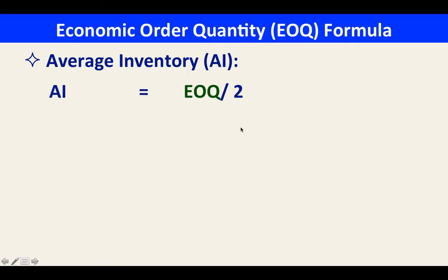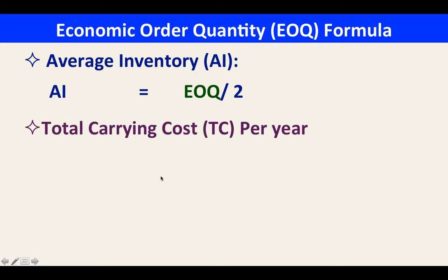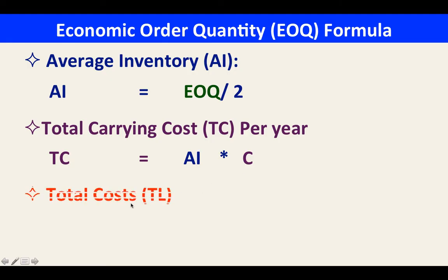The average inventory is computed simply as EOQ divided by 2. The total carrying cost per year is average inventory times the carrying cost. The total cost is the total ordering cost plus the total carrying cost. These are the related formulas for economic order quantity.